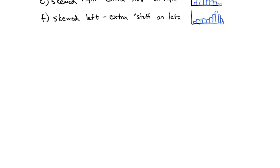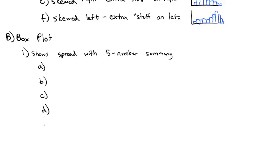A second thing we can do though to describe our data visually is to draw what's called a box plot. And a box plot shows the spread of data with what is called the five number summary. Five number summary is made up of five pieces: A, B, C, D, and E.